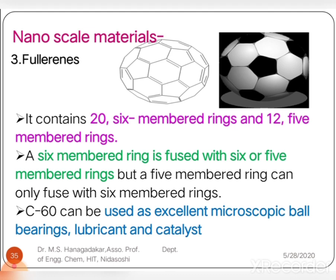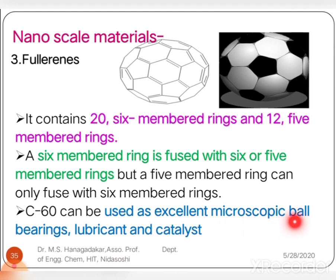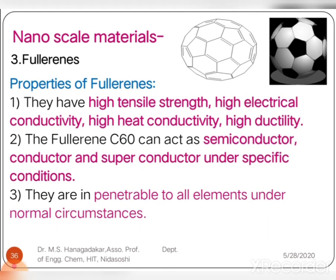C60 fullerene contains 20 six-membered rings and 12 five-membered rings in a single molecule. The six-membered rings are always fused with six-membered or five-membered rings, but five-membered rings are always fused with six-membered rings only. C60 fullerene can be used as an excellent microscopic ball bearing, lubricant, and catalyst in various industrial applications.